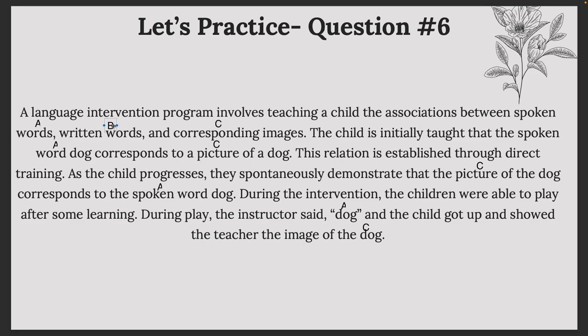So we actually don't have B involved here. If we think about A, C — C, A — A, C, what does that look like? Just because we're changing our letters from the typical A-B doesn't mean the definitions change. This is still symmetry: we have A equals C trained, and then the learner demonstrated C equals A without training. Written (B) was never included in the actual steps, so it was very much an A-C, C-A relation — a case of symmetry.